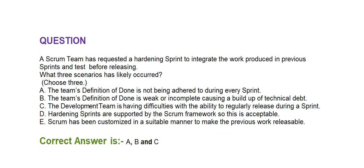Next question: A Scrum team has requested a hardening sprint to integrate the work produced in previous sprints and test before releasing. What three scenarios have likely occurred? Choose three. Option A: the team's definition of done is not being adhered to during every sprint. Option B: the team's definition of done is weak or incomplete, causing a buildup of technical debt. Option C: the development team is having difficulties with the ability to regularly release during a sprint. Option D: hardening sprints are supported by the Scrum framework, so this is acceptable. Option E: Scrum has been customized in a suitable manner to make the previous work releasable.